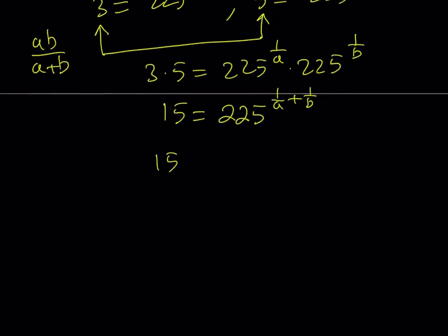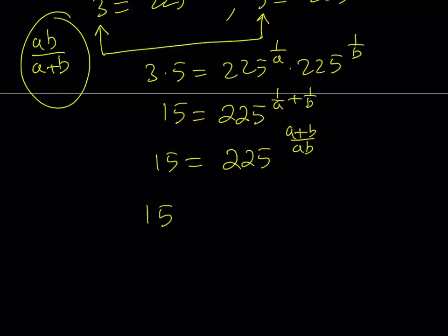Let me tell you why. If you make a common denominator, you get a plus b over ab. But notice that the expression I'm trying to evaluate is just the reciprocal of that. So why don't we raise both sides to the power of the reciprocal of this thing? I'm going to raise both sides to the power ab over a plus b.